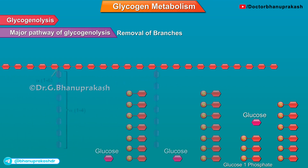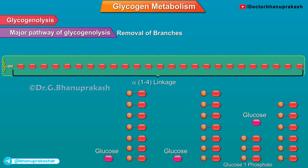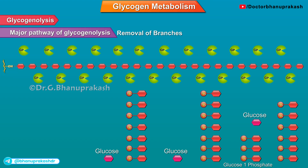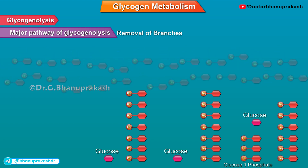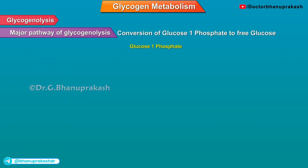After the end of this step, there will be no branches in glycogen and it is completely a linear structure with only alpha-1,4-glycosidic linkages. The enzyme will again be glycogen phosphorylase, which cleaves alpha-1,4-glycosidic linkages in the linear glycogen structure to release glucose-1-phosphate molecules.